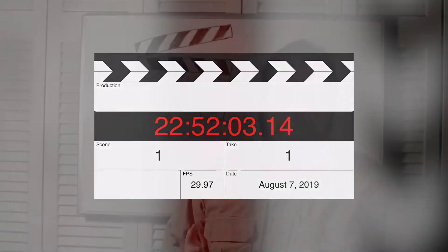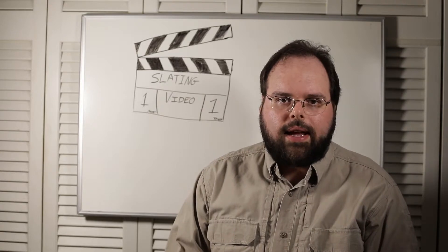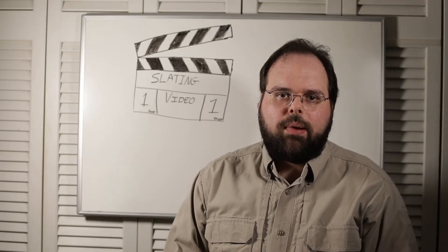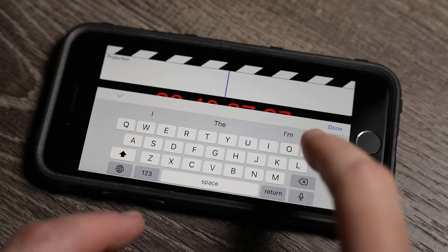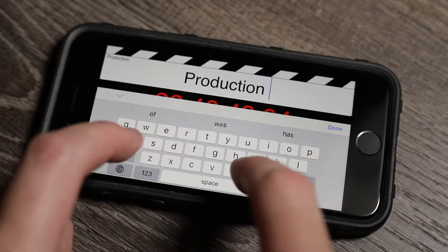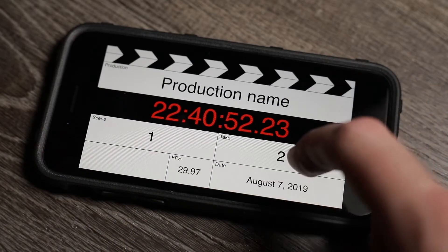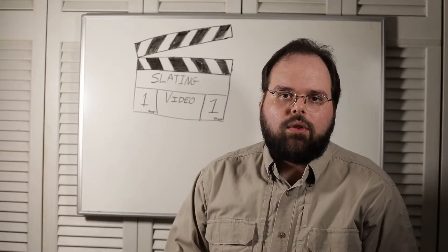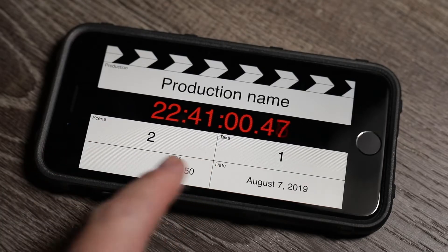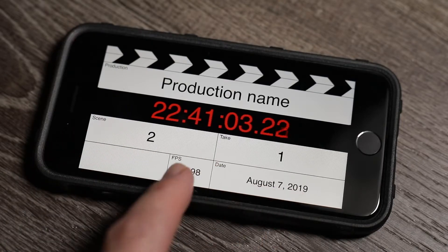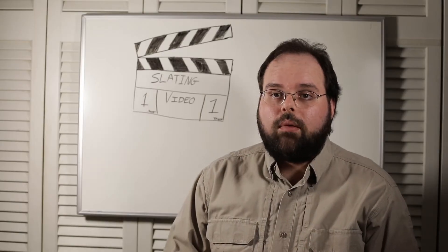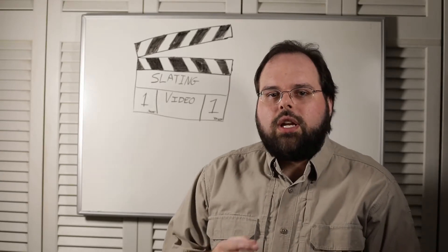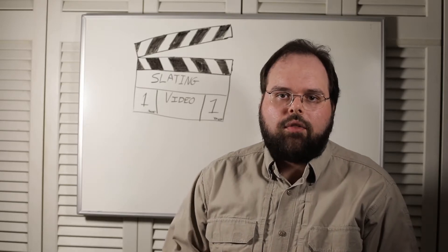To use the slate, launch it from your home screen and rotate the phone to landscape. The features are very basic, which is what I want from two hours of coding. You can tap the production field and enter your scene's name or a description of what you're shooting. You can swipe up to increment or down to decrement on the scene and take fields, and changing the scene field resets the take field to one. You can also swipe left and right on the frame rate field to change the frame rate between 23.93, 24, 25, 29.97, 50, and 59.98 frames per second.